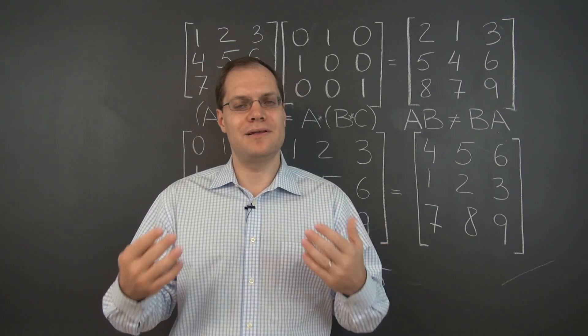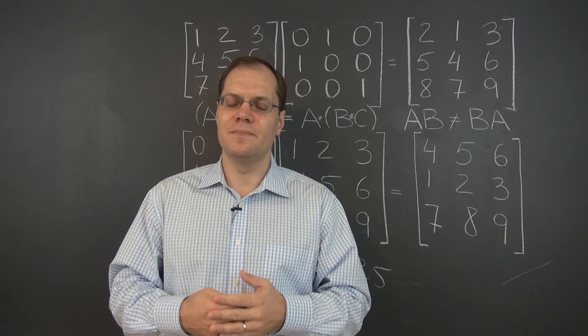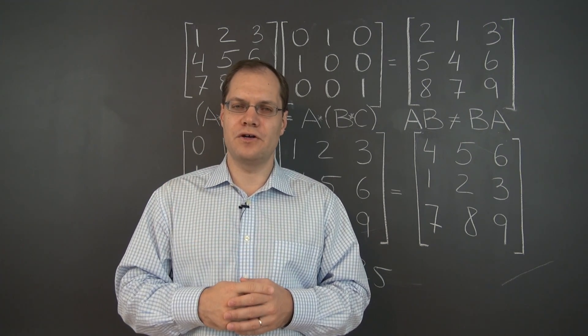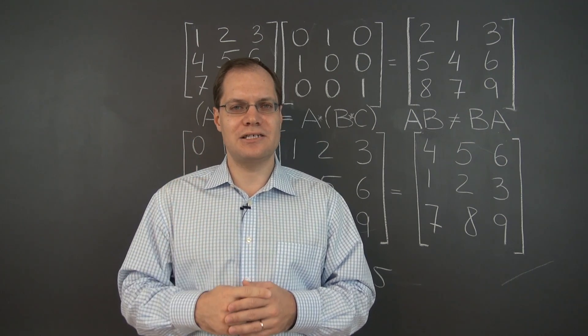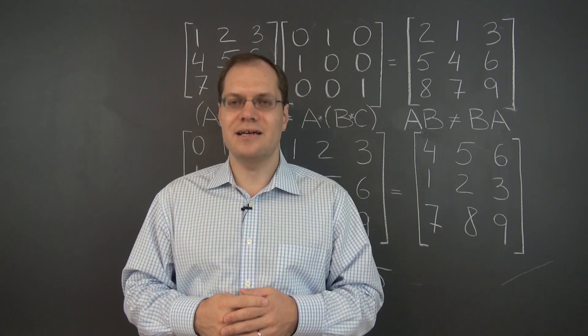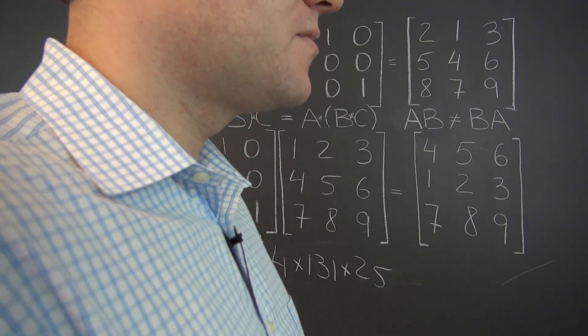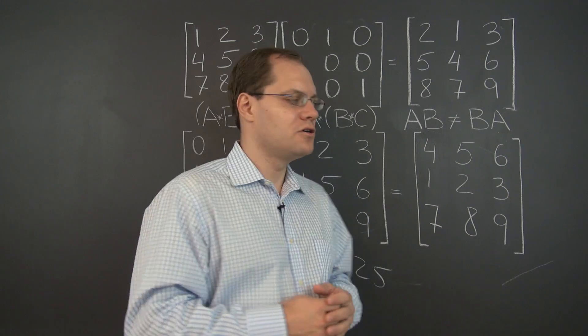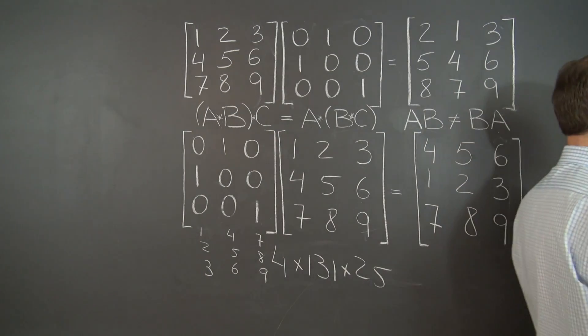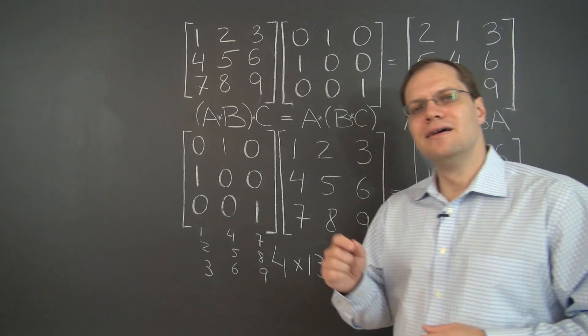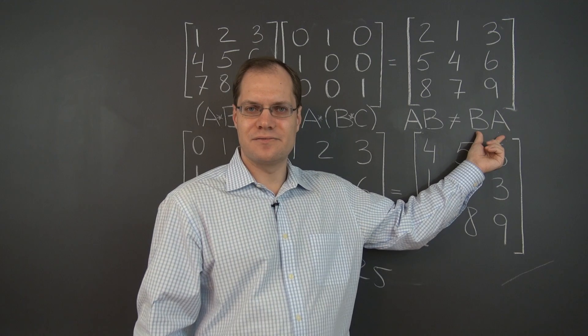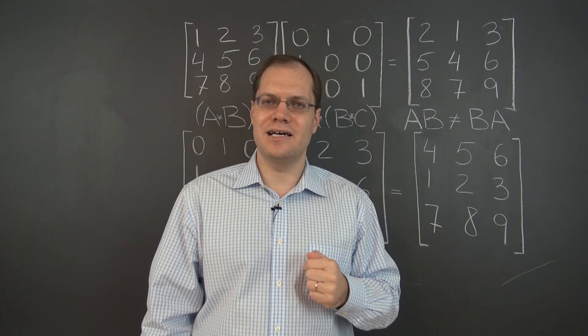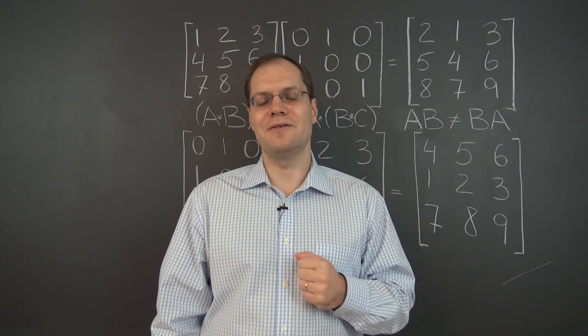Here's another example commonly given to illustrate lack of commutativity. Let's consider two actions: taking a step forward and then turning left. Let me take a step forward first and then turn left, and then do the same two actions in the opposite order. Taking a step forward and turning left results in this configuration. Now let me do the same two actions in the opposite order. Turning left, taking a step forward. You see that two of the same actions but taken in opposite order lead to different results. So there is no commutativity in life and no commutativity in matrix multiplication.